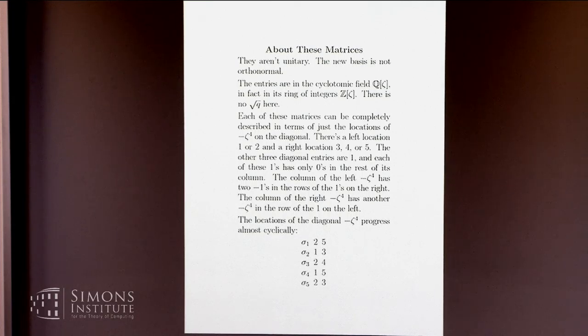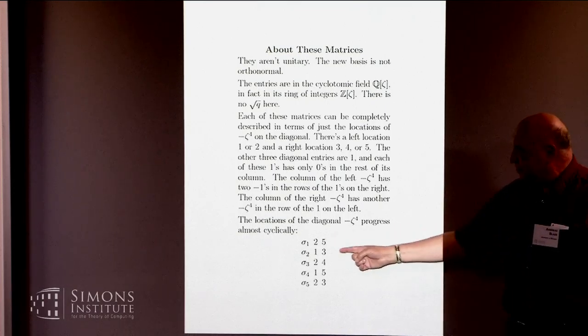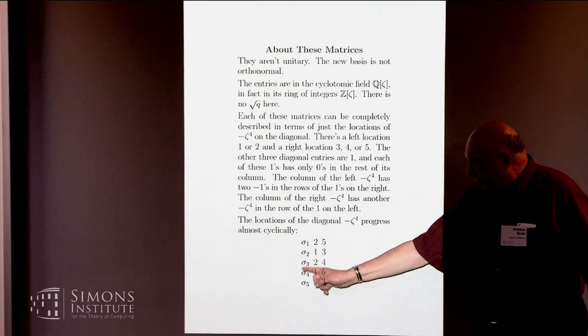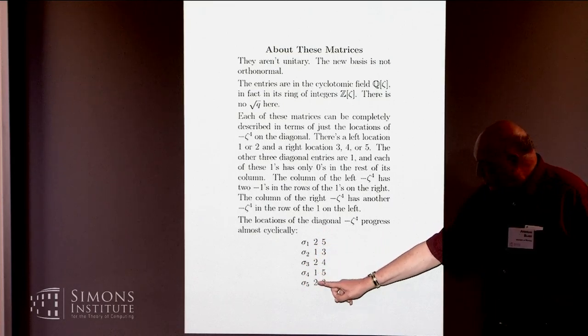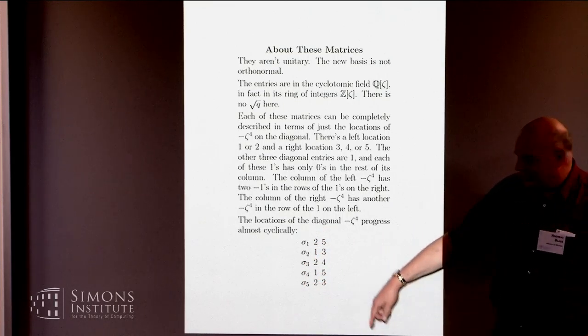If you go, if you look at where the minus-zeta to the fourths are, I made a convenient list here. And you see, as you go through the list of Artin generators, 1, 2, 3, 4, 5, you get 2, 1, 2, 1, 2. Looks nice and symmetric. 5, 3, 4, 5, 3. Gee, there ought to be a 4 down there. There ought to be a 1 in the other column. There ought to be a 6th Artin generator.